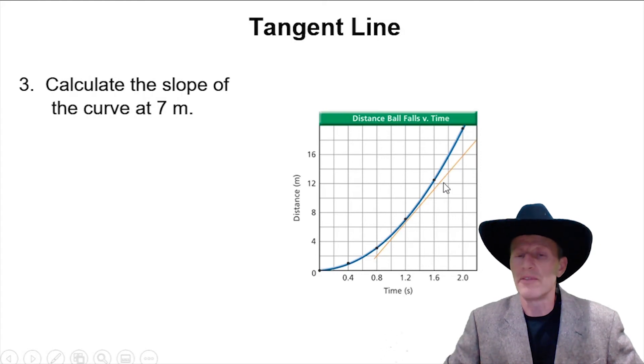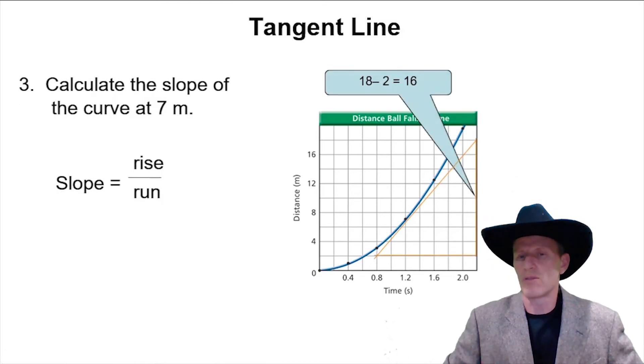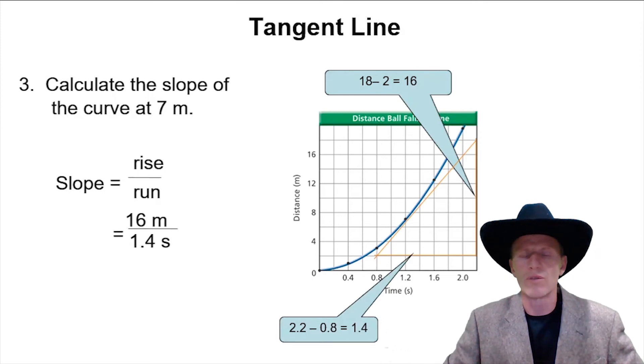Now we need to find the slope of that tangent line. So if we drew a vertical line and a horizontal line, and we measured the length of that vertical line and the length of the horizontal line, we would get our rise over run. And dividing them would get 11, which is more than 6.1. So at 2 meters, the runner was running at 6.1, but at 7 meters, this runner is moving a little bit faster at 11.